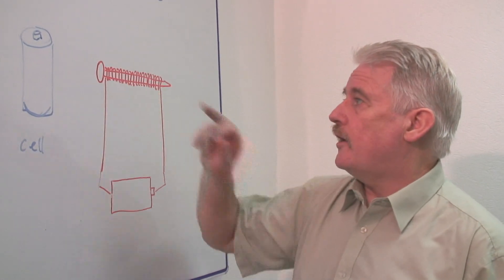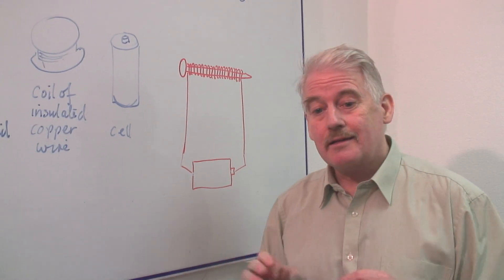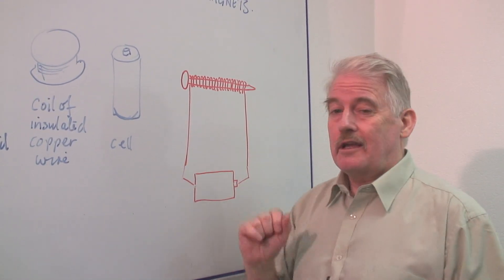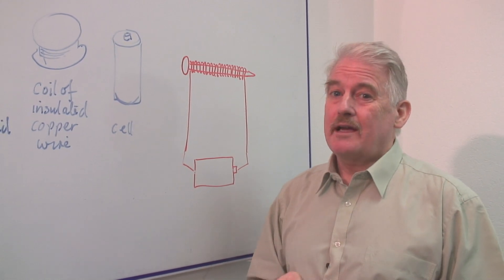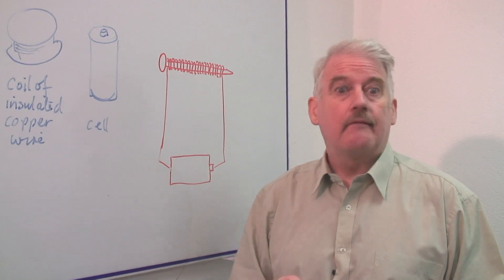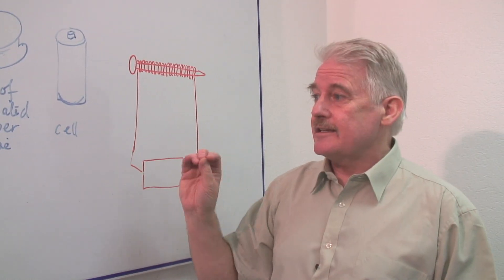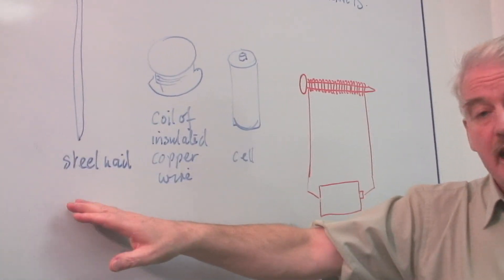You will find that this electromagnet, whilst it is an electromagnet, actually very often becomes magnetic after a while. This whole magnet thing starts to work, and this becomes actually magnetic. And the steel nail will retain magnetism.